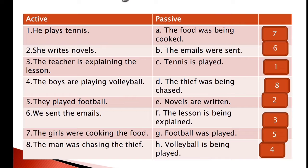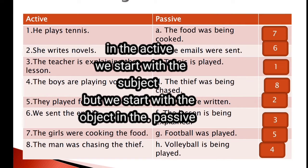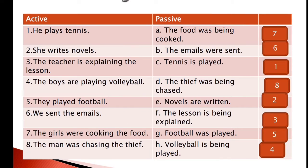This is the difference between active and passive. In the active sentence, we start with the subject. But in the passive, we start with the object — it is more important. In the active, we say 'plays,' but in the passive we say 'is played.' We are going to see later how we form the passive sentence.